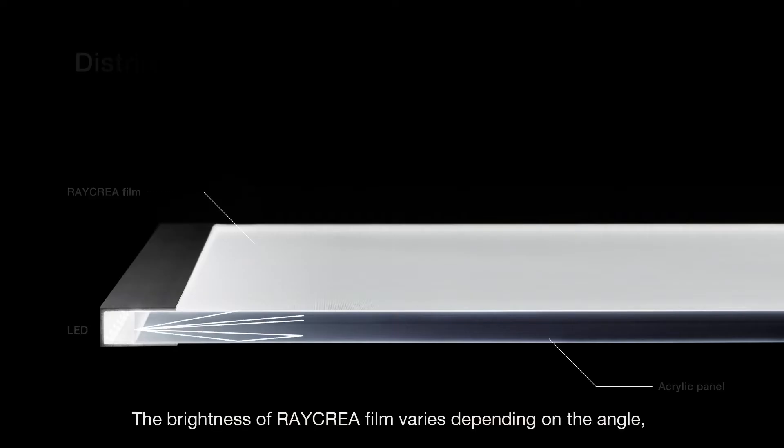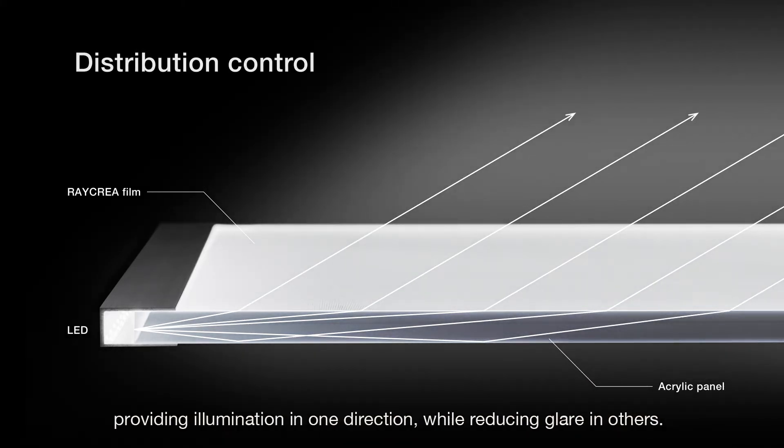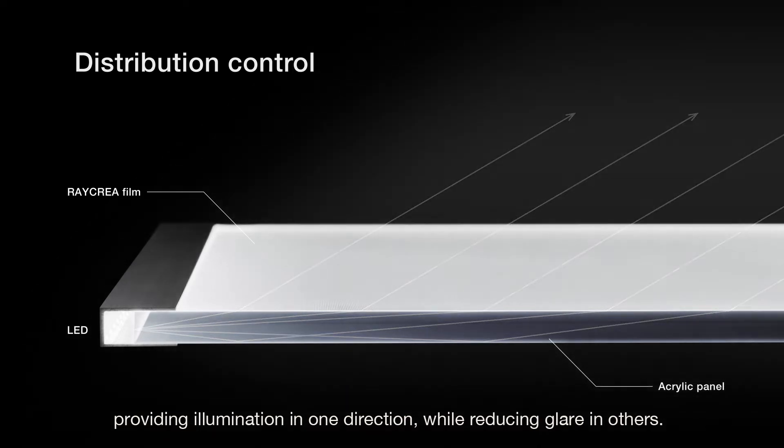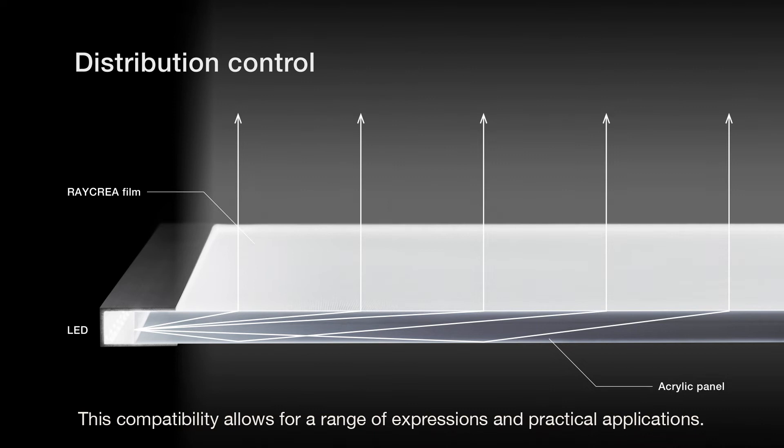Raycrea specializes in controlling the beam angle while illuminating surfaces. The brightness of Raycrea film varies depending on the angle, providing illumination in one direction while reducing glare in others. This compatibility allows for a range of expressions and practical applications.